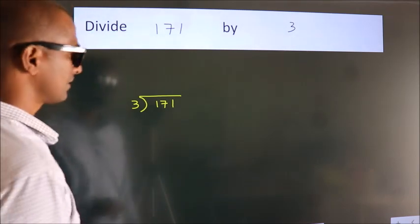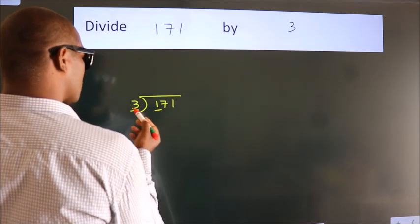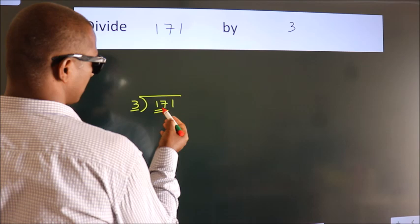Next, here we have 1, here 3. 1 is smaller than 3, so we should take 2 numbers: 17.